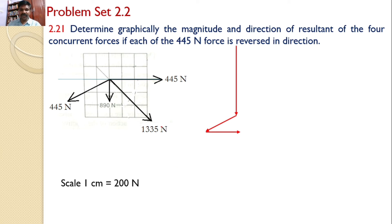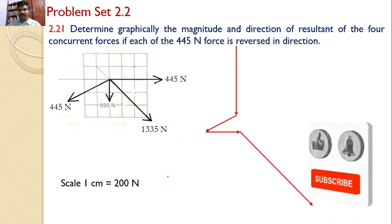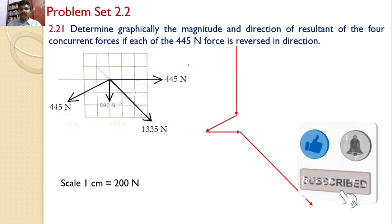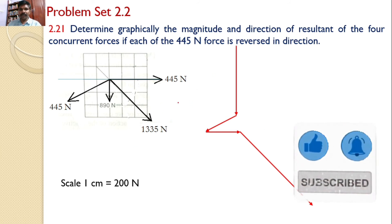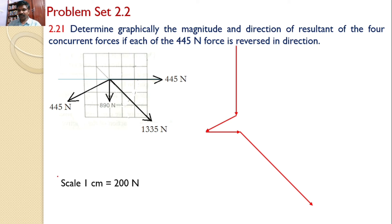Next, I will take the 1335 Newtons force. The length of this 1335 Newtons becomes 1335 divided by 200. That force I will draw from the head of the last drawn force. I have now drawn all four forces using the graphical technique. The line joining the tail of the first point and the head of the last point becomes the resultant force.